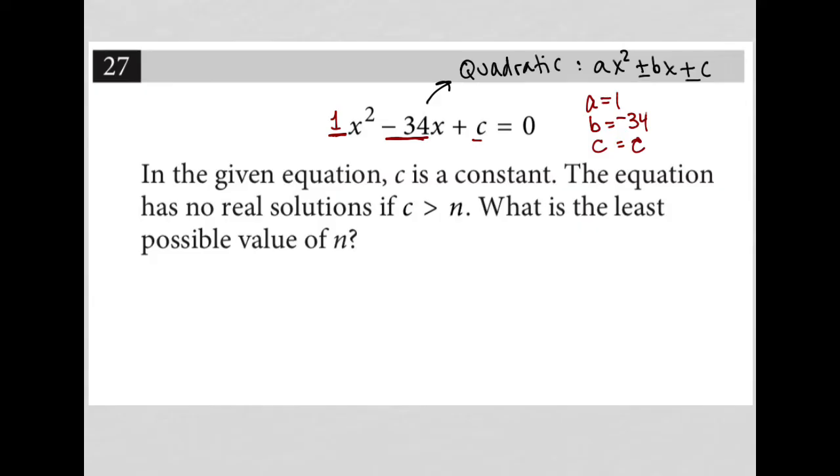So then how do we determine what c values, if c has to be greater than n, what c values cause this full equation to have no real solutions? The next thing to remember is that it says no real solutions, not no solution at all. So it does have imaginary solutions. To determine if a quadratic equation has real solutions, we use something called the discriminant.